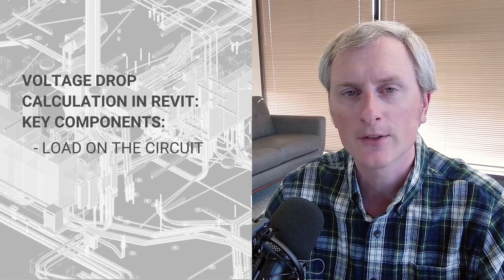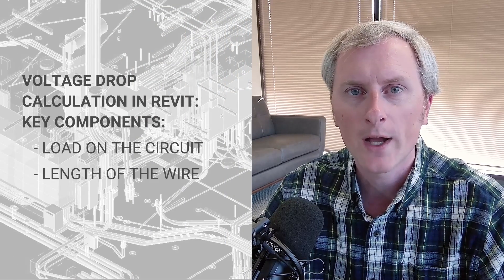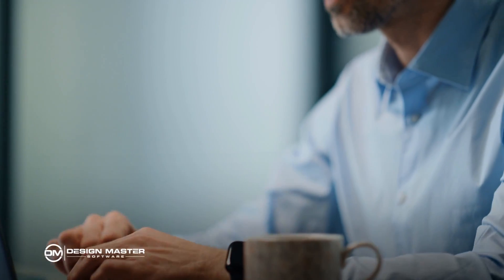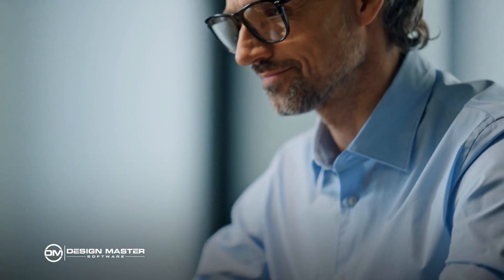Stay to the end of the video and I will show you a way that you can calculate voltage drop in Revit. The voltage drop calculation is a function of really three pieces you need to get from Revit: the load on the circuit, the length of the wire, and the impedance of the wire. Using those three pieces of information, you can calculate the voltage drop on the circuit. Let's take a look at how Revit handles all three of those.